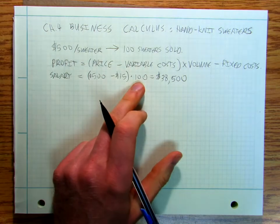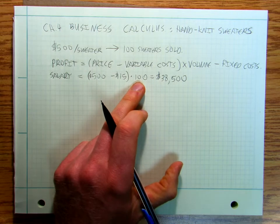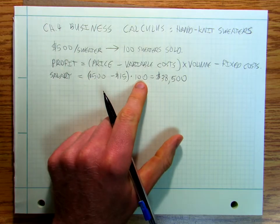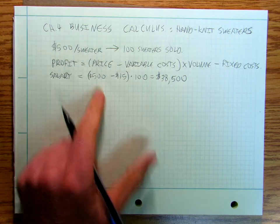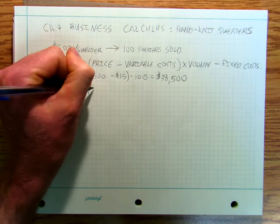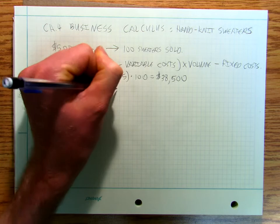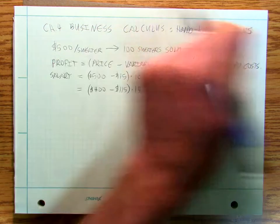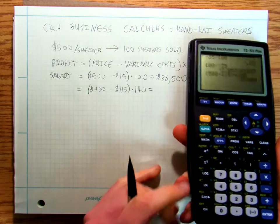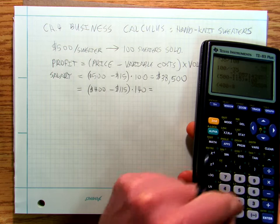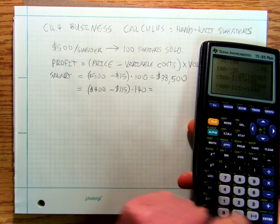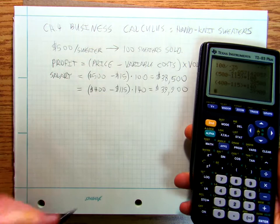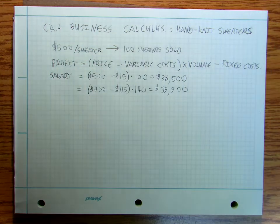But now the thing is you figure that you can knit more sweaters than that. You can't sell more sweaters than that, that's about when you're talking about a $500 price point. You can only find about 100 people that want to buy your sweaters at $500, but you figure out that if you lowered your price to $400 you could sell about 140 sweaters and that would give you 400 minus 115 times 140, that gives you $39,900. So you're making more money.